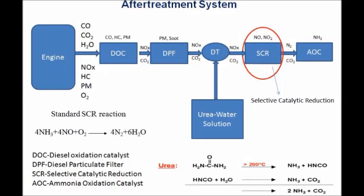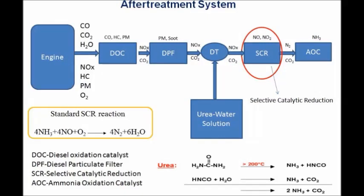DT represents the decomposed tube. It is made up of mixer blades and perforated plates. The main function of the DT is to mix the mixture properly before it enters into SCR. In this slide you can see exhaust gases entering the DT from the left side and urea water solution from the bottom. The properly mixed reactants then enter the SCR catalyst, where ammonia mixes with nitric oxide and nitrogen dioxide to convert to free nitrogen and water.